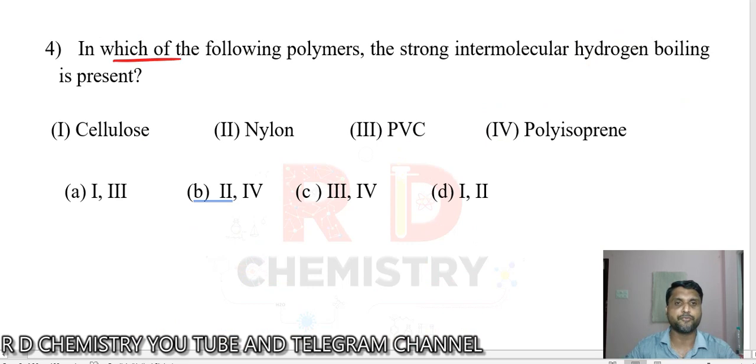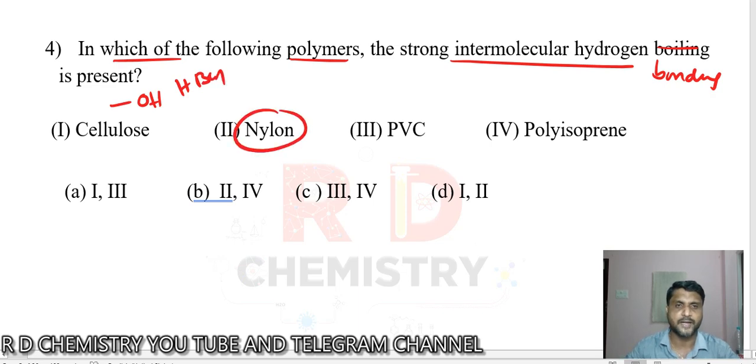The answer is option number four. Question number four: In which of the following polymers is strong intermolecular hydrogen bonding present? Hydrogen bonding is present. Cellulose, a glucose derivative, contains OH groups, so there is hydrogen bonding possible.